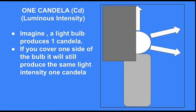is because candelas measure the power of light, how bright the light will be in a certain direction. So covering half of the bulb won't affect the intensity of light.